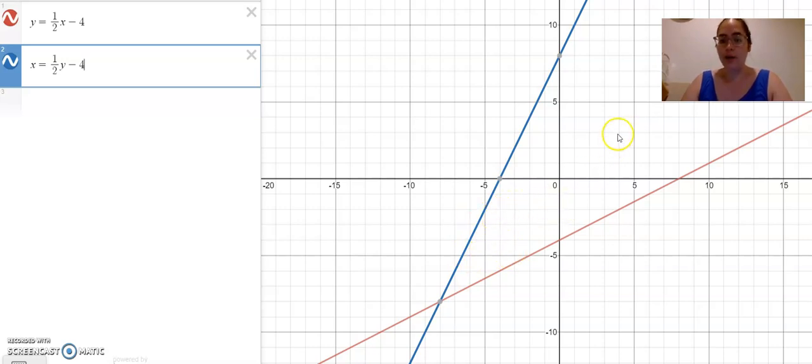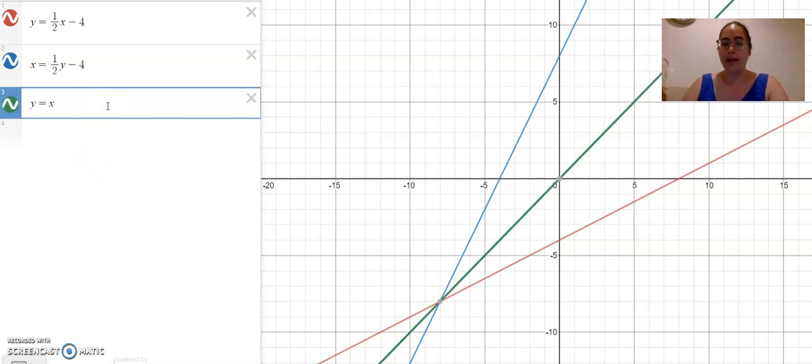And what we will see for every inverse function that we ever do is that one property of the inverse relationship is that the graphs reflect each other over the line y equals x. So you see this green line that we've just added is serving as a mirror for the blue inverse function and the red original function. In fact, you can see they meet right here at negative eight, negative eight.